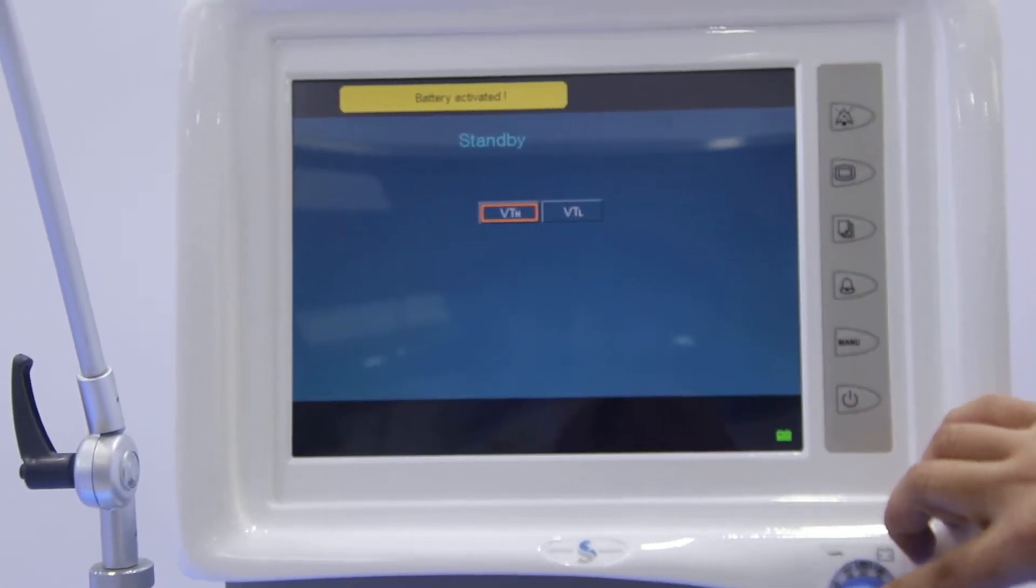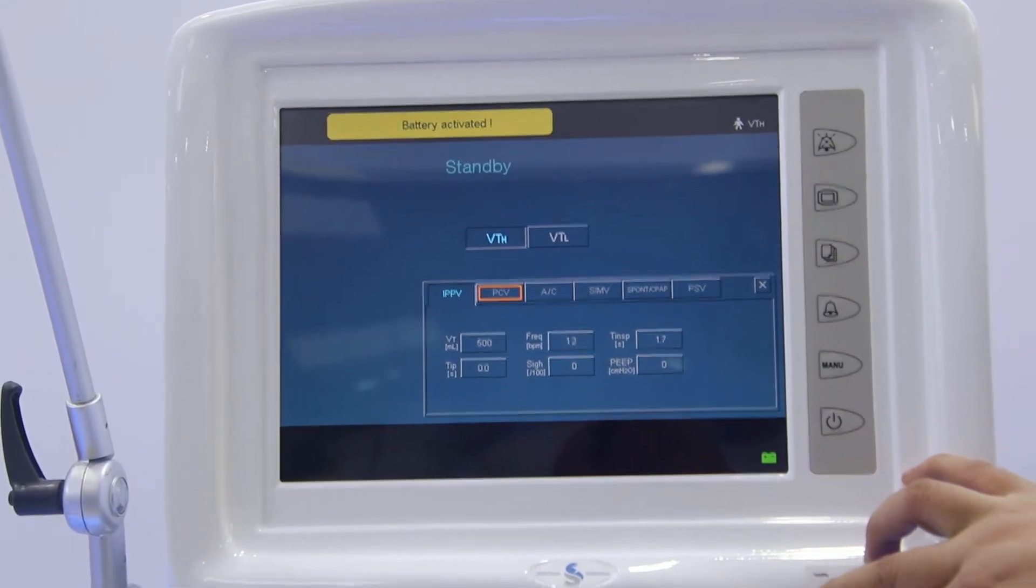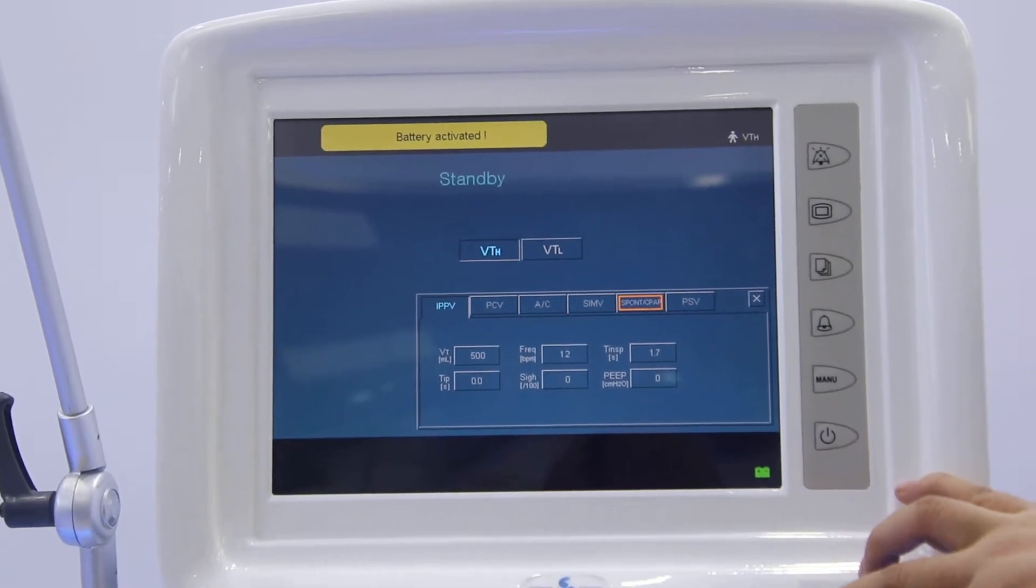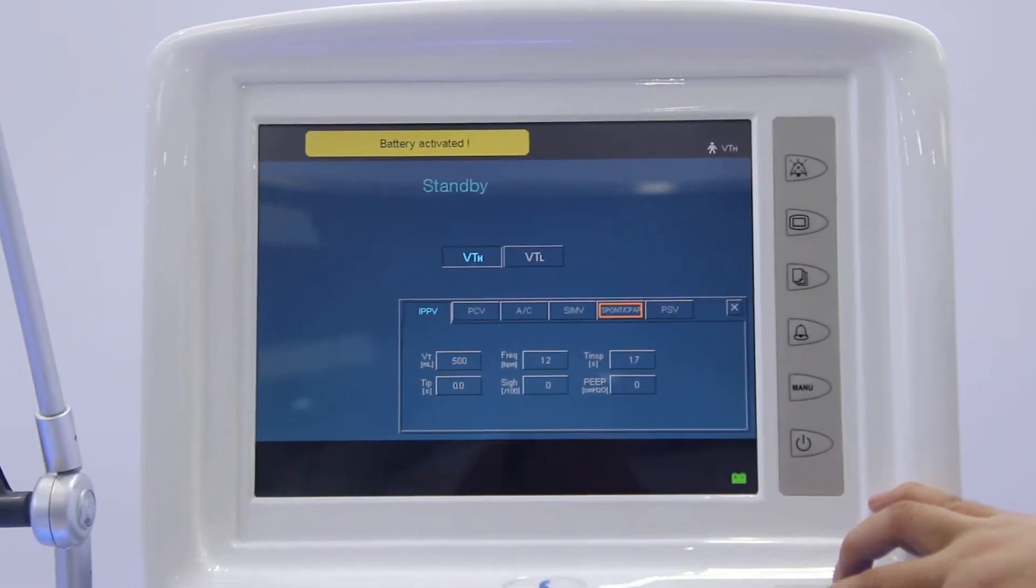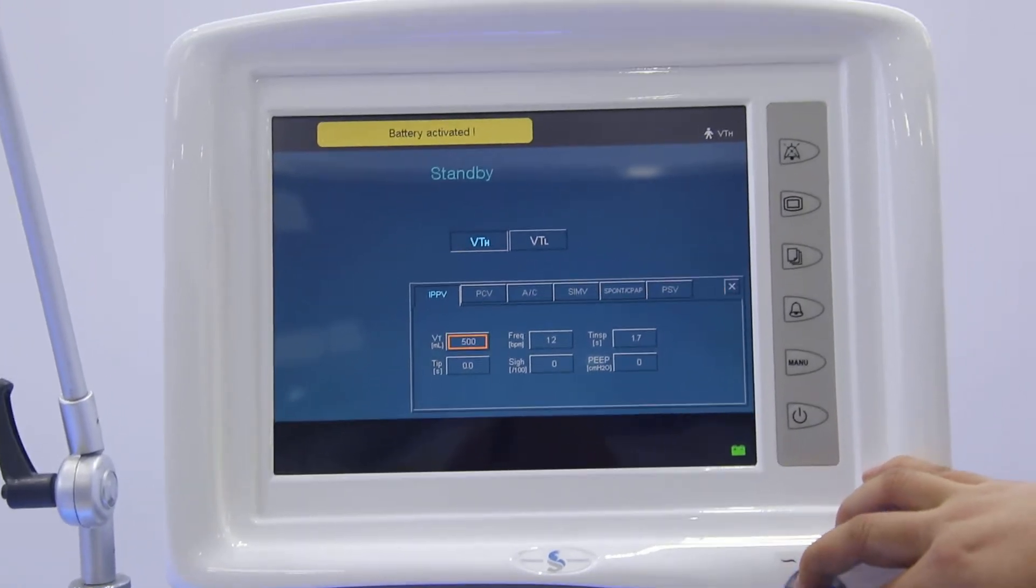Once we press the rotate button, we can do the ventilation mode choosing first. It includes IPPV, PCV, AC, SIMV, spontaneous CPAP, and PSV. So it means our machine has both the volume control and also the pressure control mode. We can use for different patients.